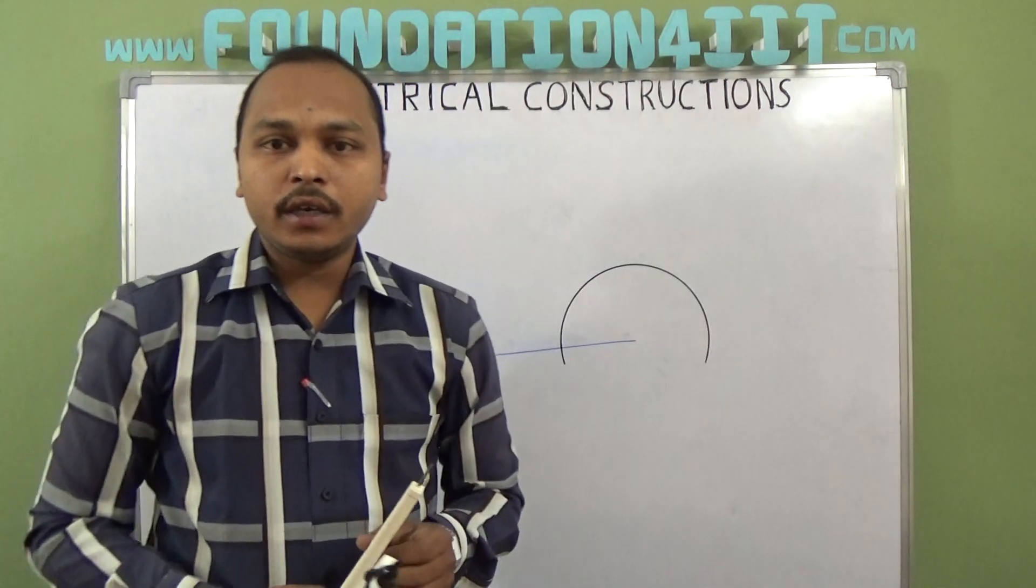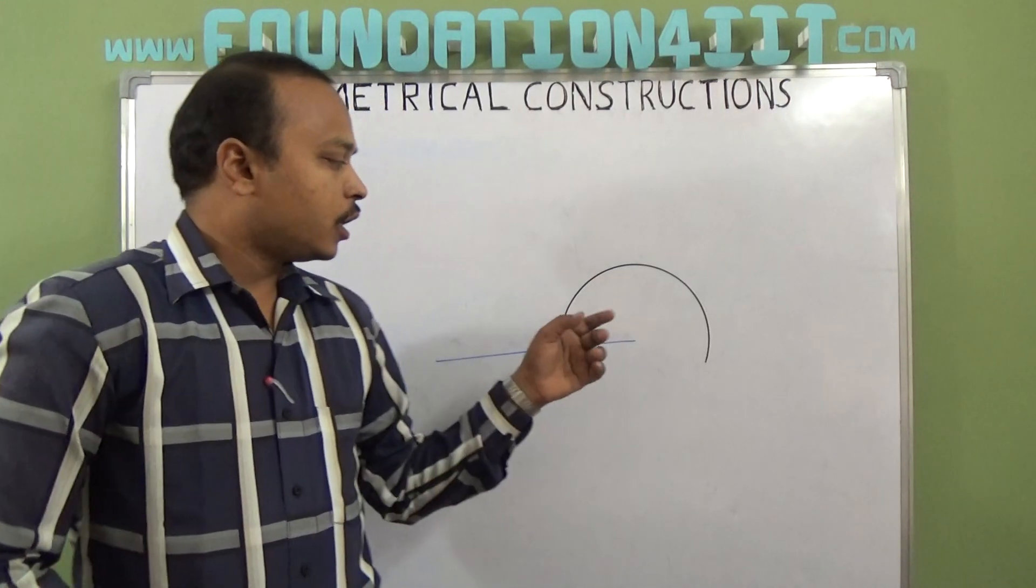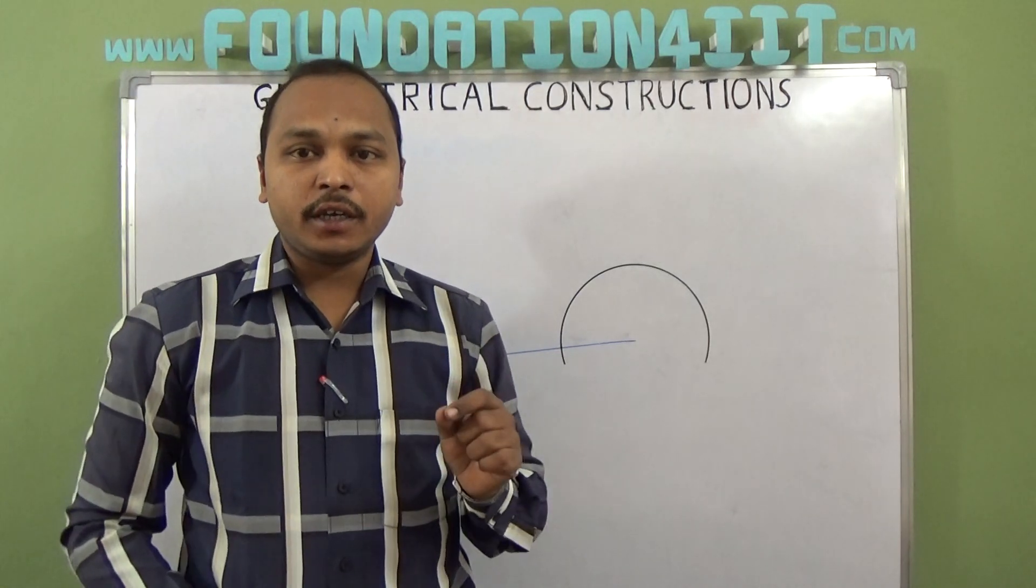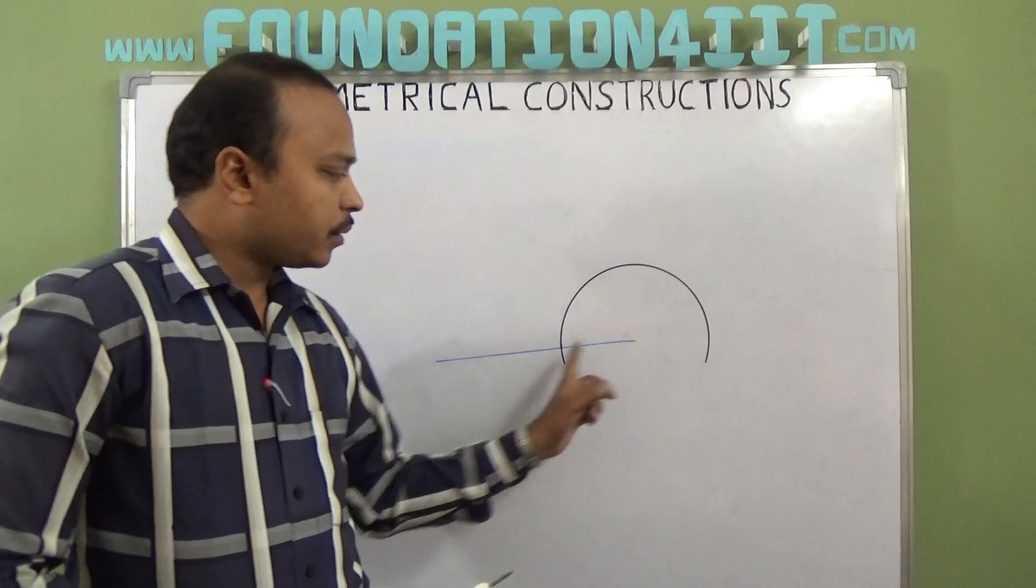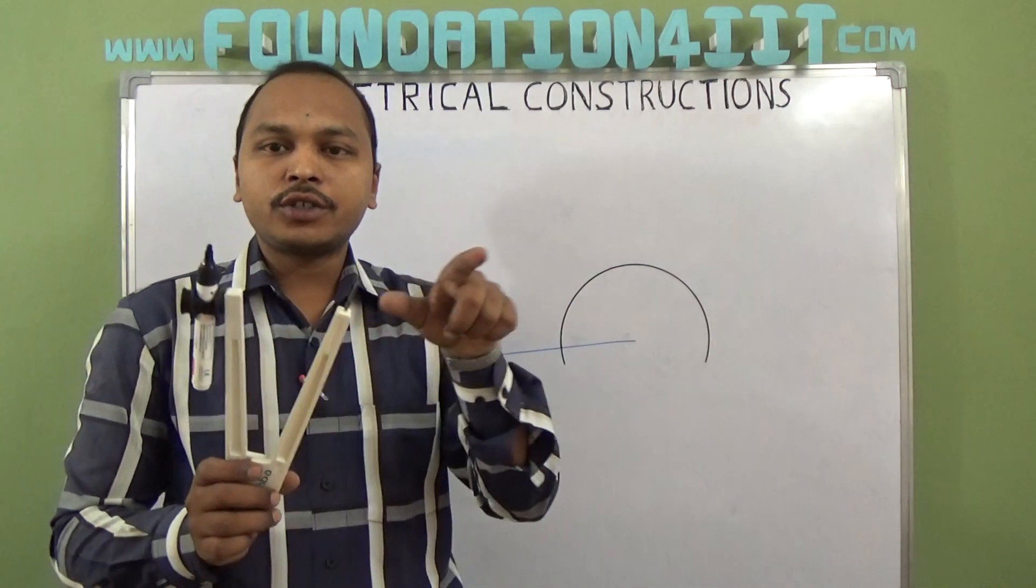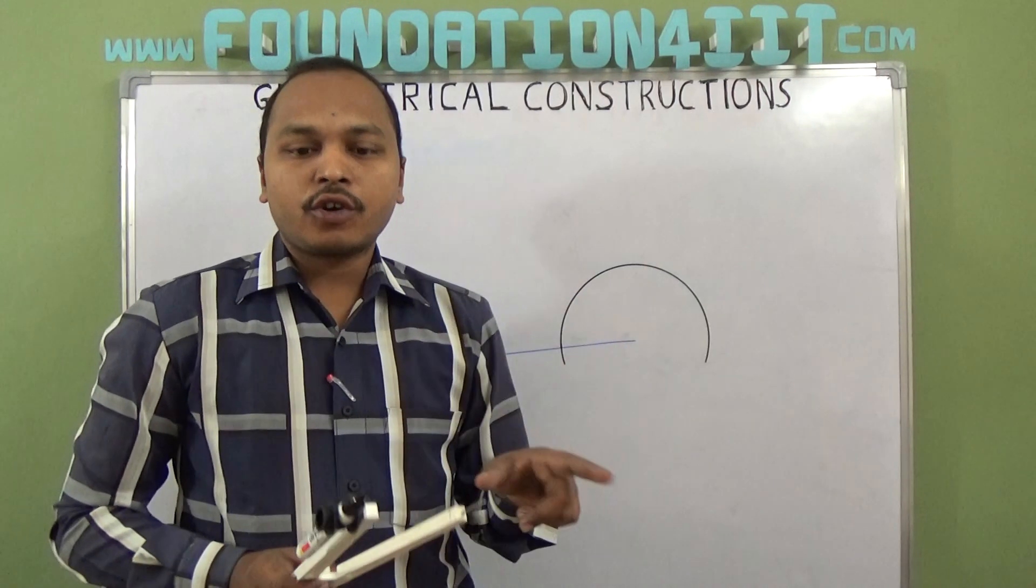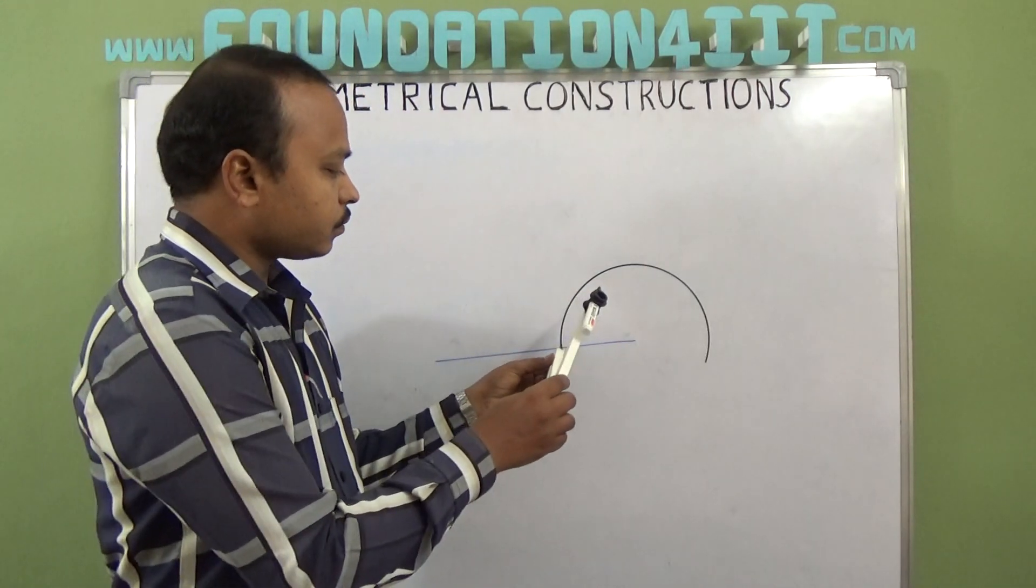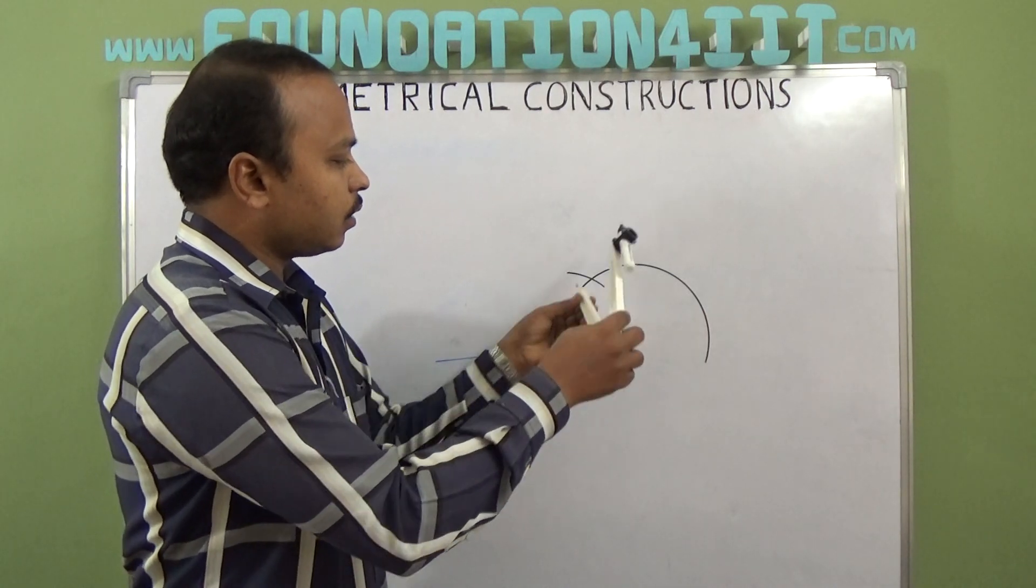Actually 90 is half of 180, right? 180 divided by 2 is 90. If I can find out the 180 degree point then I can bisect 0 and 180. From here I draw an arc without changing the radius. Without changing this, from here cut this arc.